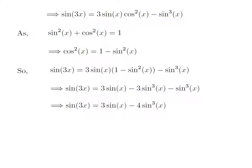Further arithmetic operations give us sine of 3x is equal to 3 times sine of x minus 4 times cube of sine of x. This is the identity for sine of 3x.